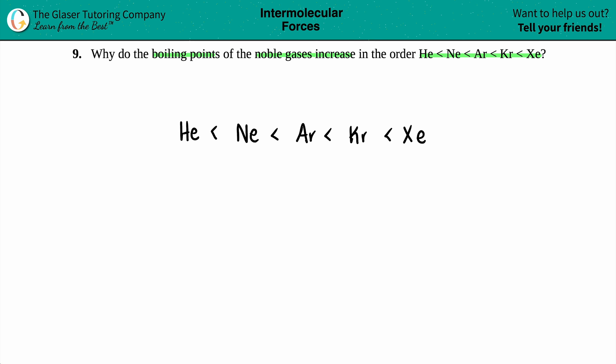So in this fashion, these signs are saying that whatever's to the left is less than. So we're saying that if we're doing it in this way, that helium has the lowest boiling point. Maybe I'll just put BP for boiling point. And that means that xenon has the highest boiling point.